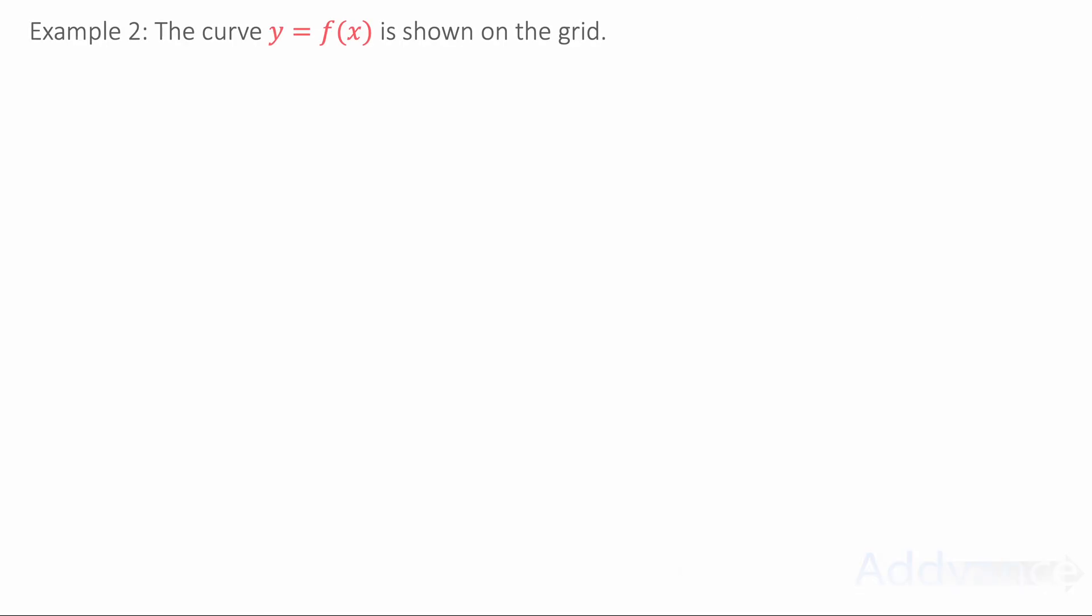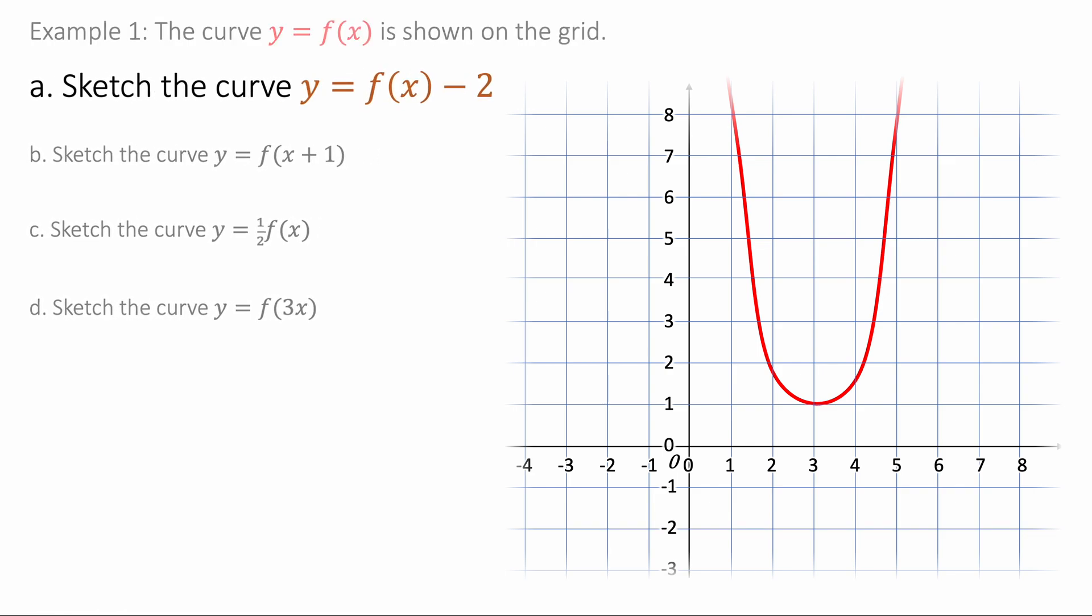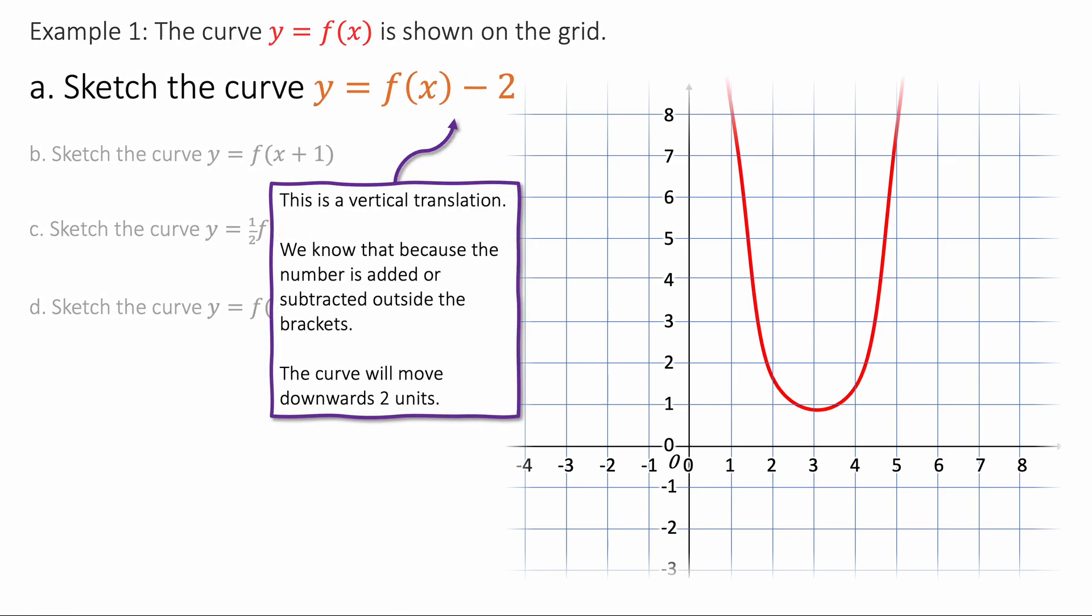Okay. Now let's look at example 2. The curve y equals f of x is shown on the grid. Sketch the curve with the equation y equals f of x minus 2. Okay, so we're going to move the curve down two spaces. Like this. Because it's a vertical translation, moving down two spaces.